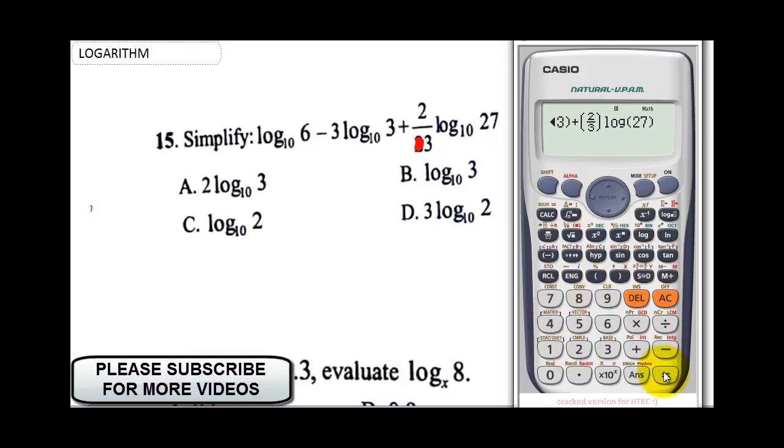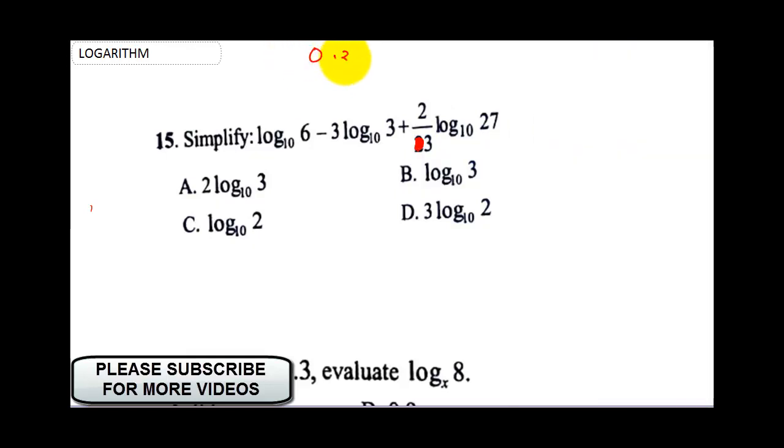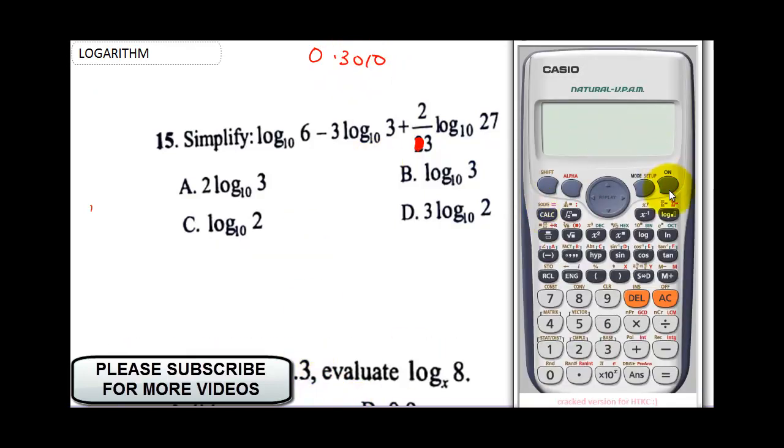Then this will now be log 27, I'll close my bracket. Now once I press equal to, it will drop my answer. So it's telling me that my answer is 0.3010. So now you know that your answer is going to be 0.3010. We need to now test our options to know which one will give us that answer.